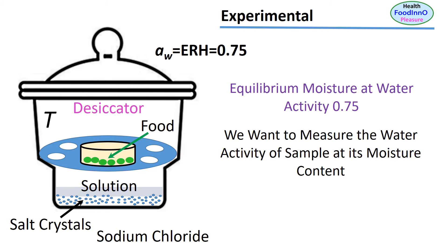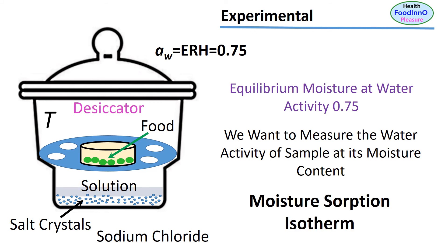In this case, we need to measure the moisture sorption isotherm — that is, the relationship of the equilibrium moisture content as a function of water activity at a constant temperature. After that, we can predict the water activity of the sample at any moisture content. This problem can be avoided in commercial water activity measurement instruments.